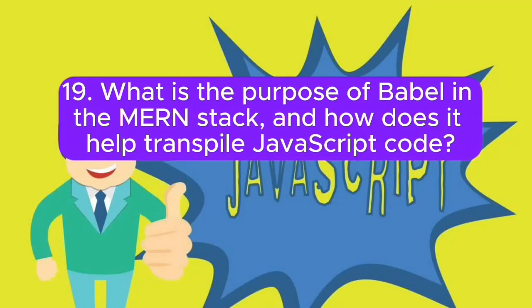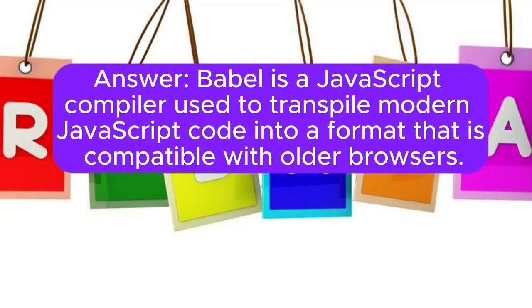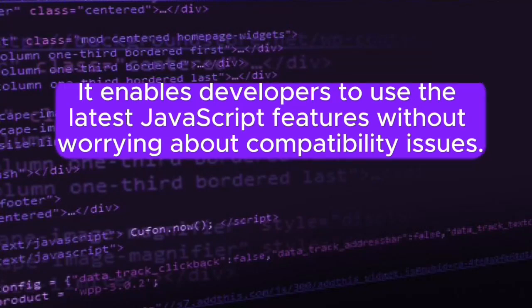19. What is the purpose of Babel in the MERN stack, and how does it help transpile JavaScript code? Answer: Babel is a JavaScript compiler used to transpile modern JavaScript code into a format that is compatible with older browsers. It enables developers to use the latest JavaScript features without worrying about compatibility issues.